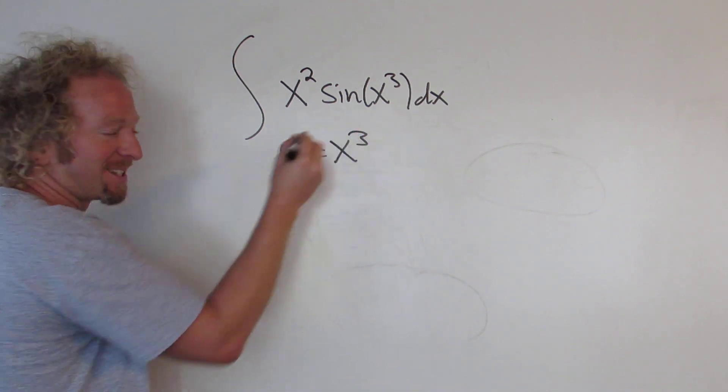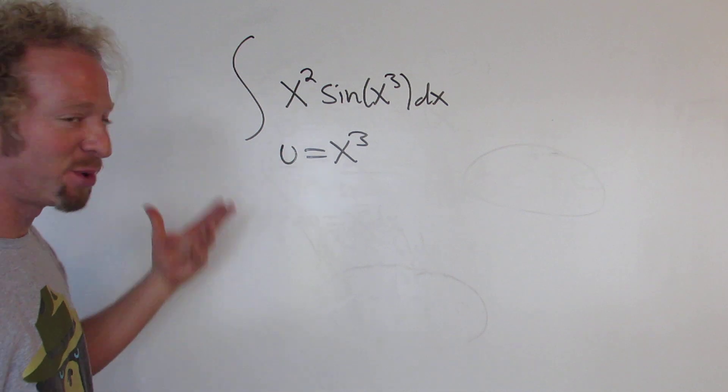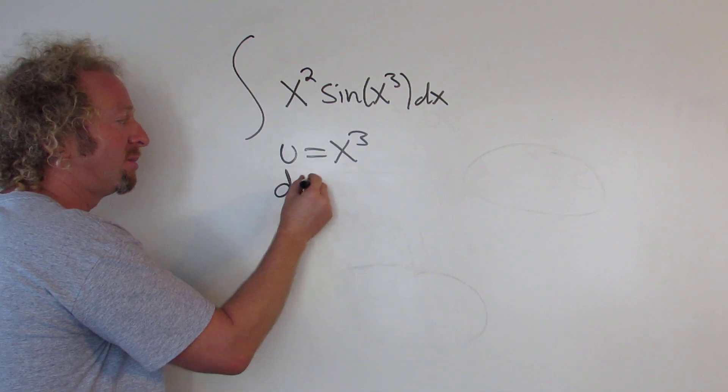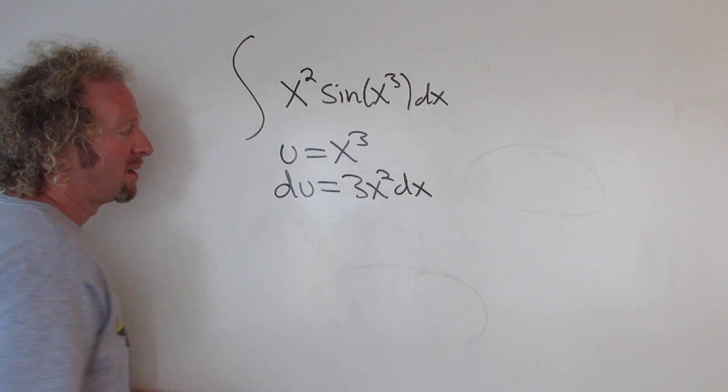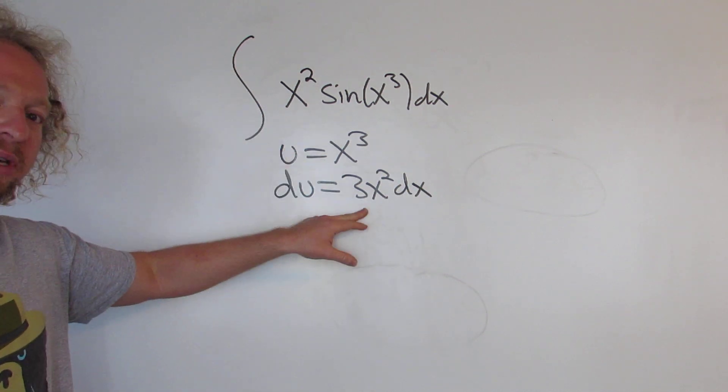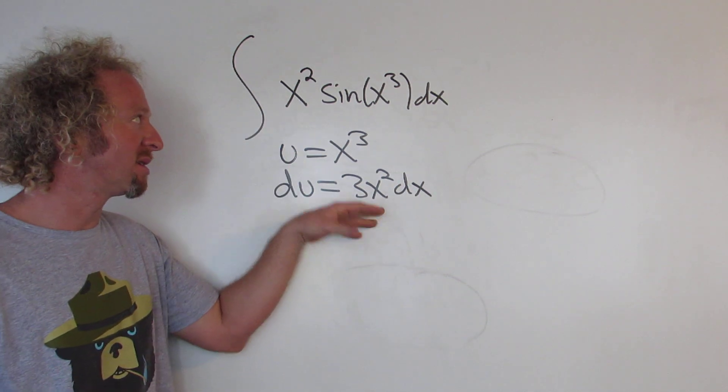So u is x cubed. Now you take the derivative of both sides. So du is equal to 3x squared dx. Now you'll notice there's no 3 here, but there is a 3 here. So the idea is to make this look like this.